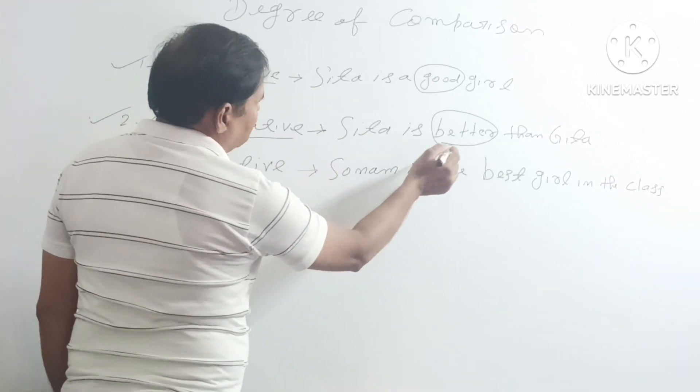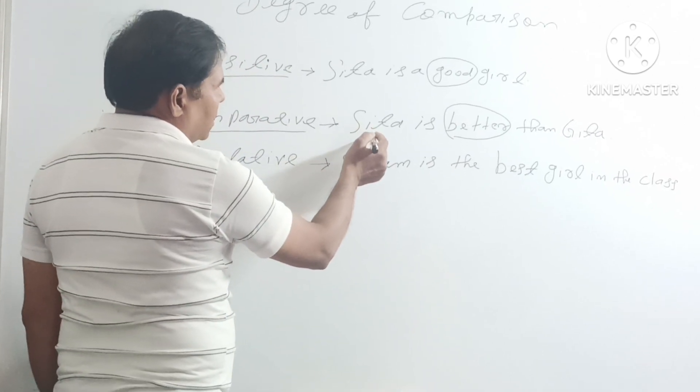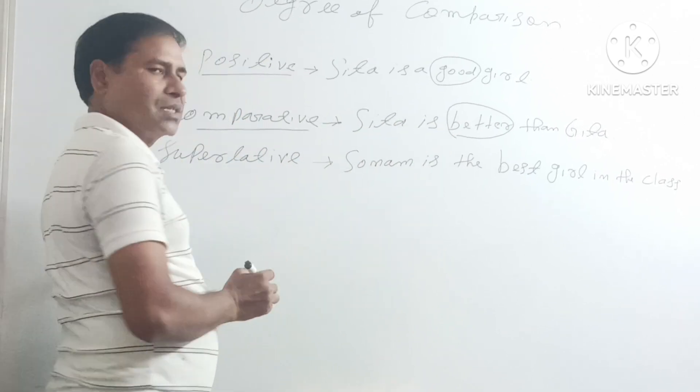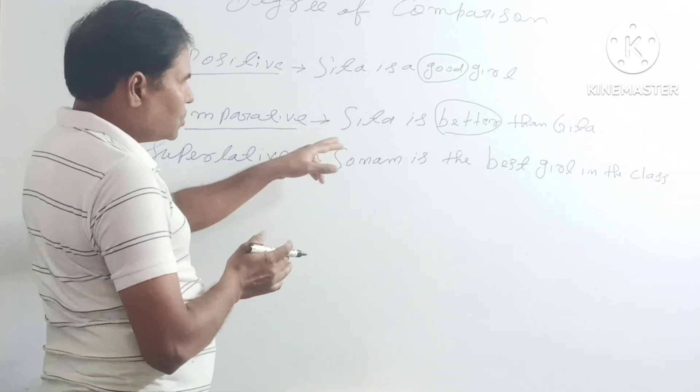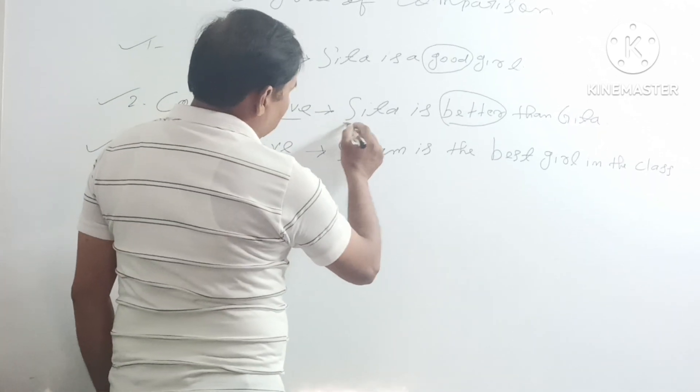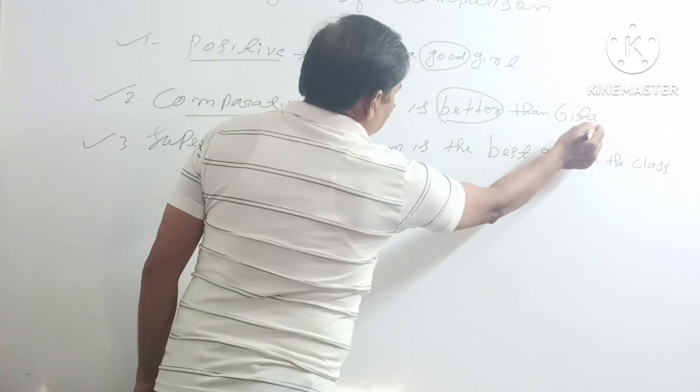For example, Sita is better than Gita. So when we do comparison between two, here is Sita and this is Gita, this is comparative degree.